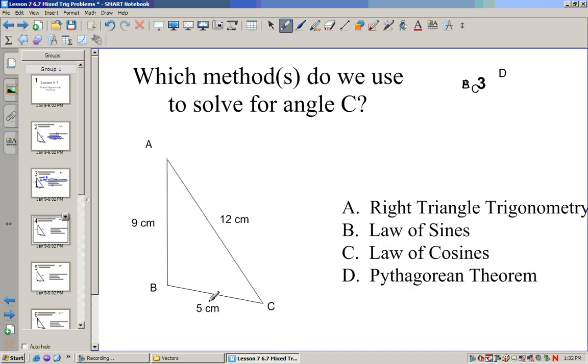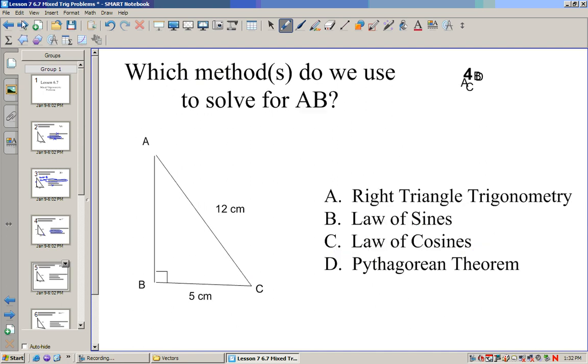Now if we know three sides and we want to find an angle, the only thing that will help us with that is the law of cosines. Here, if I want to solve for AB, I have two sides, so I can just use Pythagorean Theorem, and that would give us the side AB.